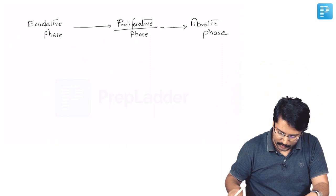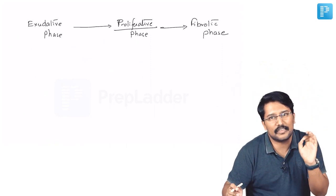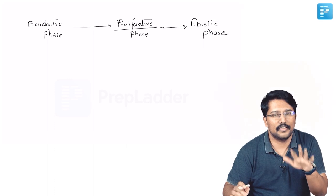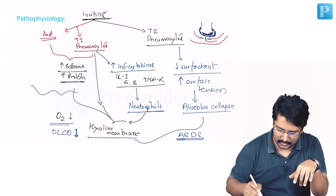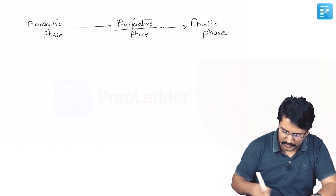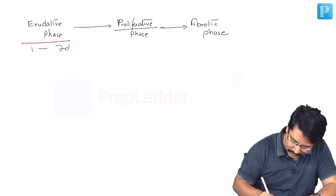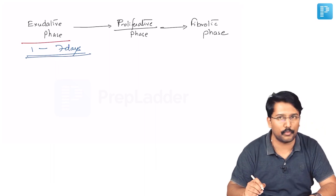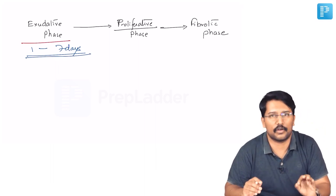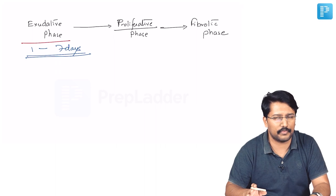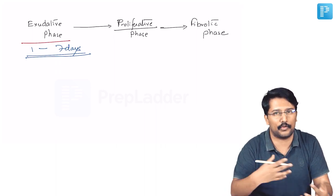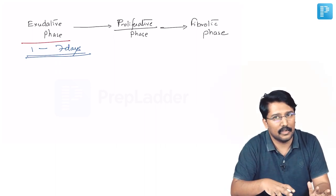Now let us talk about the timeline. The first seven days after an initial inciting event has happened we see all these exudative changes. This is the first phase which is called as exudative phase which usually lasts from day 1 to day 7. Timeline is very important, these are frequently asked MCQ points. So exudative phase lasts for around seven days where all the pathophysiological or molecular changes that we discussed earlier are happening.